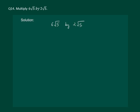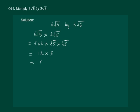Let us read the question: multiply 6 root 5 by 2 root 5. We start with 6 root 5 to be multiplied with 2 root 5. This can be solved by multiplying the terms outside the root together and the terms with the root together. This will give us 12 into 5, which is equal to 60, as the required answer.